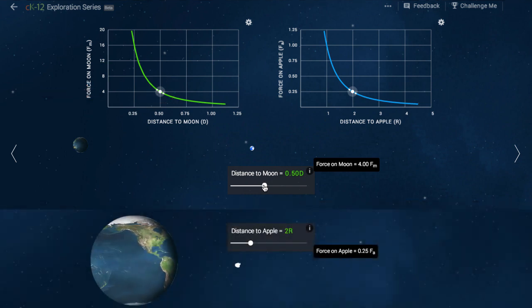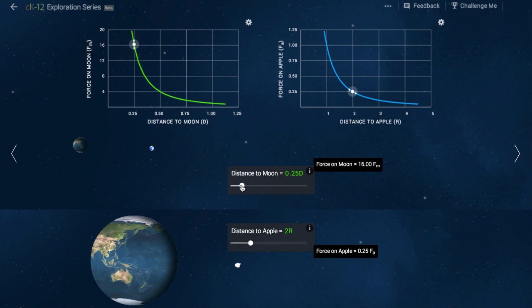If we make the distance half as much again, the force goes up by four again to 16 times its initial value. This is what is meant by the inverse square law.